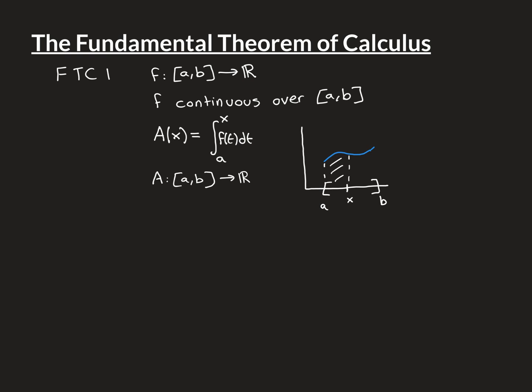There is one value where the answer is not yet clear: X equal to A. For all other values A(x) is defined, but we haven't defined what it means to integrate from A to A, where A is the same number. It doesn't seem to mean anything under our Riemann definition of integration. Intuitively, if you don't go forward at all, the area under the curve is zero, so we will define that value to be zero — but it is a separate definition.